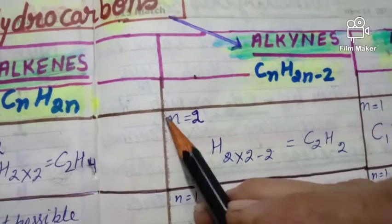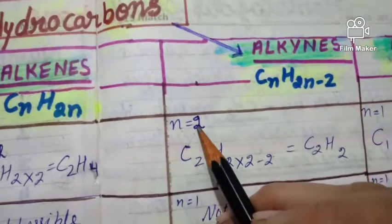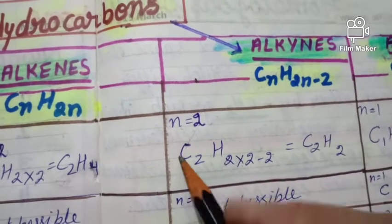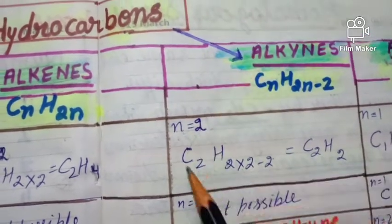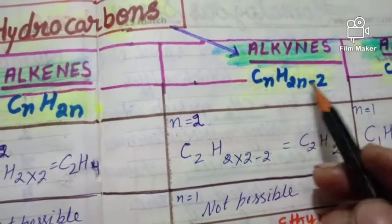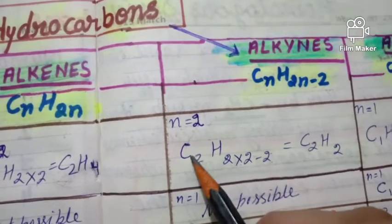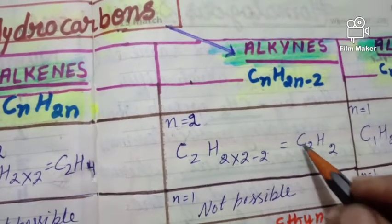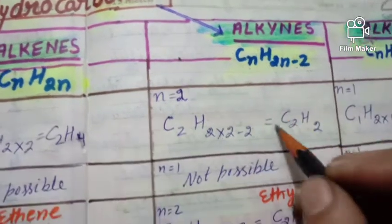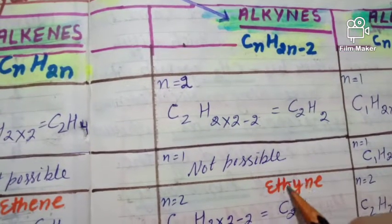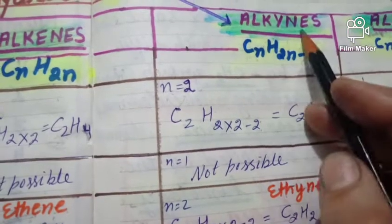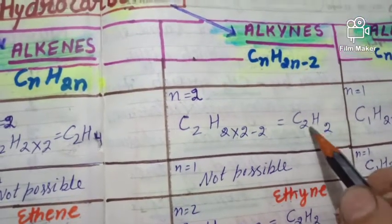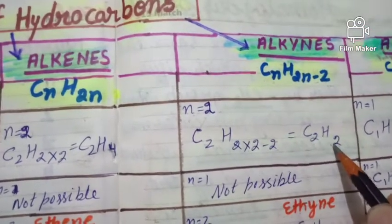Similarly for alkynes, the general formula is CnH2n−2. Again we take n = 2, not n = 1, because at least two carbon atoms are necessary. Putting n = 2: C2H(2×2−2) = C2H4−2 = C2H2. Since two carbon atoms are present, the root word is 'eth.' Adding the suffix from alkynes, '-yne,' eth + yne = ethyne. So C2H2 is the formula of ethyne.